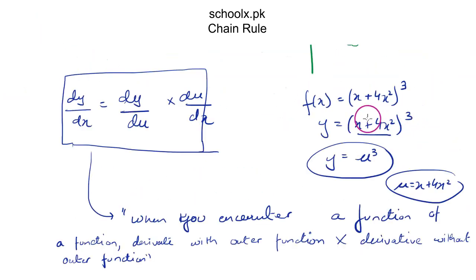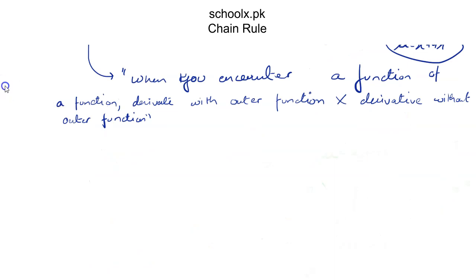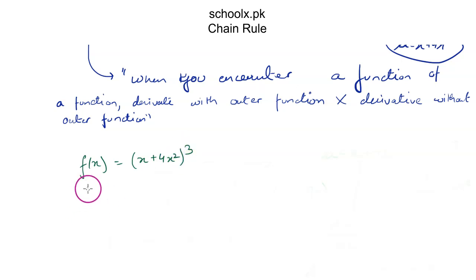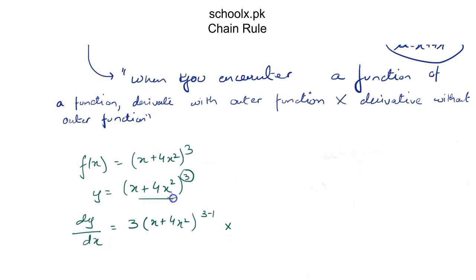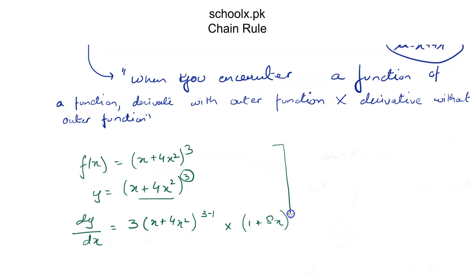Let's do the same example: f(x) = (x + 4x²)³. To differentiate, I first write it clearly, then apply the statement — differentiate the outer function, multiplied by differentiate without the outer function. So dy/dx = 3·(x + 4x²)² multiplied by the derivative of the inner function, which is 1 + 8x. So this is our answer, calculated in only three steps.